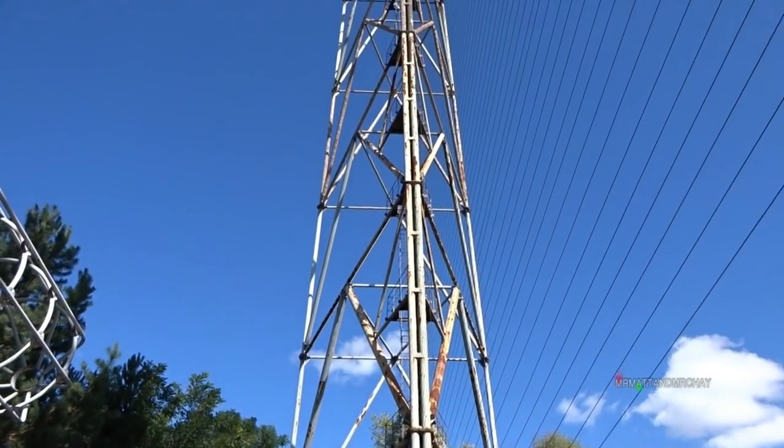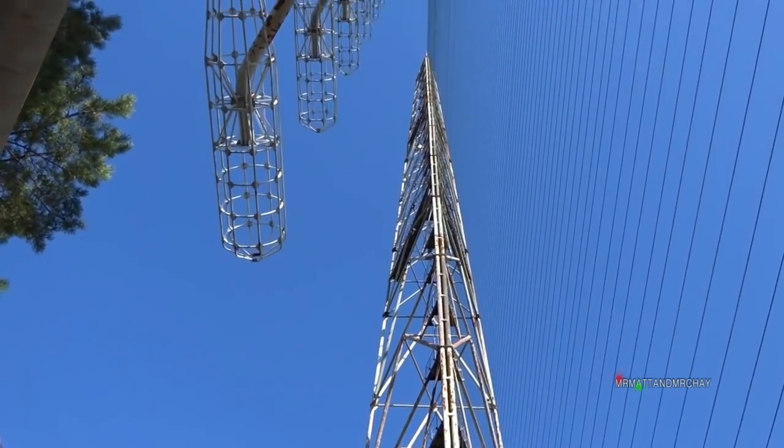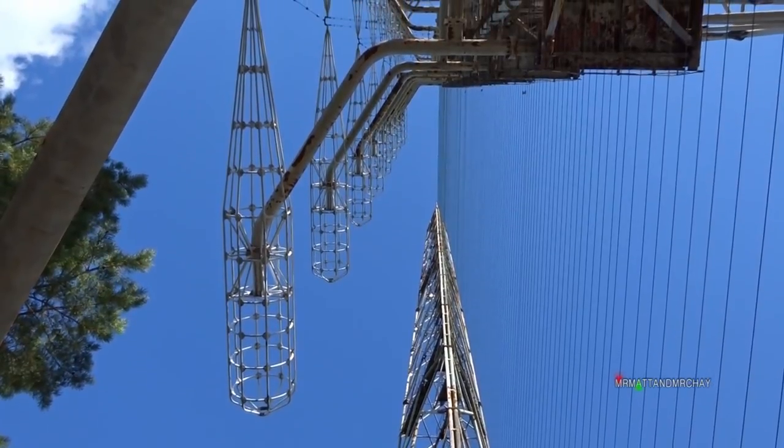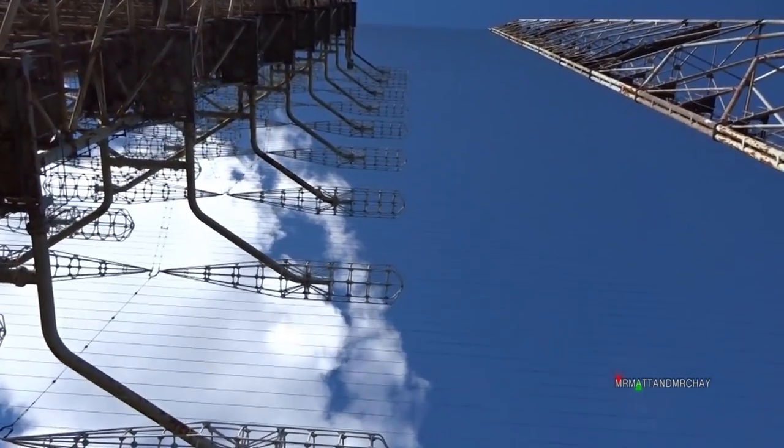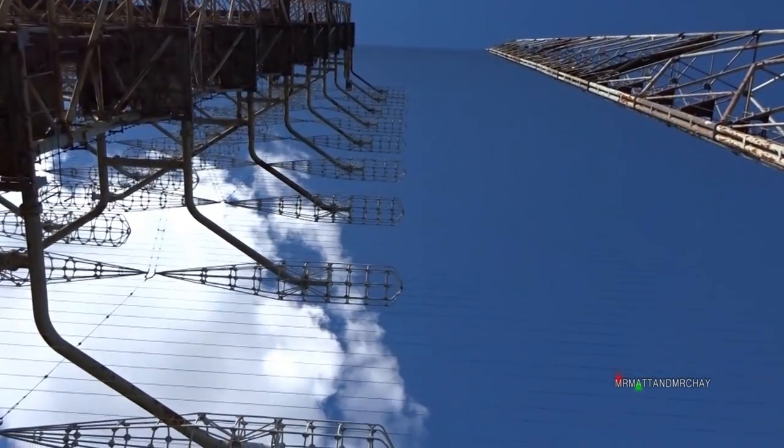Officially there were only ever two radar installations, this being Duga-1, but everyone calls it Duga-3. This is called an over-the-horizon radar system with a transmitter and receiver.